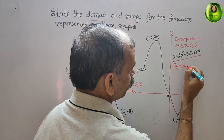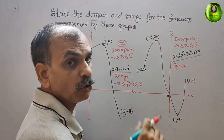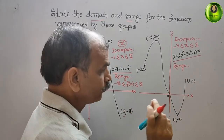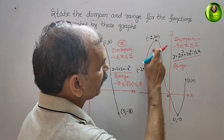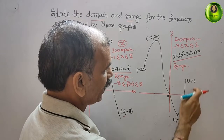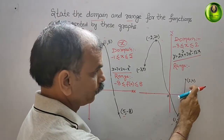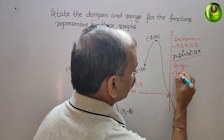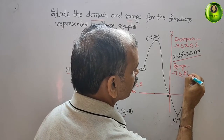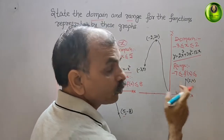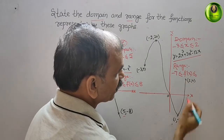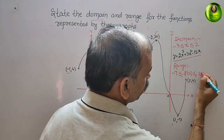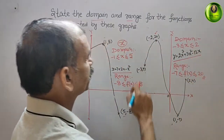Now for the range of the second graph, we look at the minimum value of y. The y values are 9, 20, minus 7, and 4. The minimum is minus 7 and the maximum is 20, so the range is minus 7 less than or equal to f(x) less than or equal to 20. These are your domains and ranges.